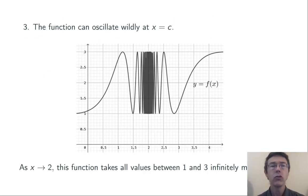Finally, the function could oscillate wildly at x equals c. In this case, I've drawn an example where c is 2. As x gets closer and closer to 2 here, the value of the function fluctuates back and forth forever between 1 and 3. It doesn't settle down to any particular value. So, the limit as x goes to 2 of f(x) here does not exist.